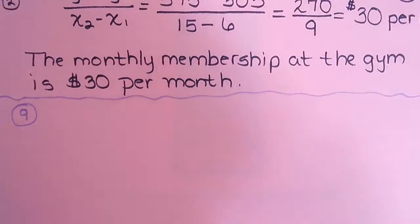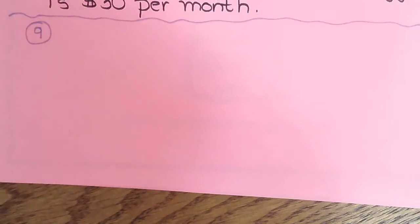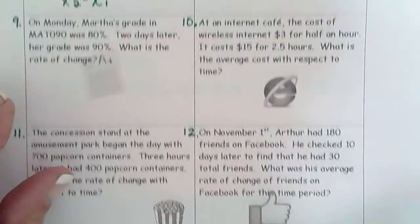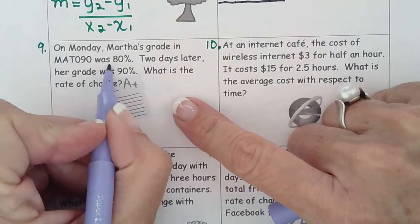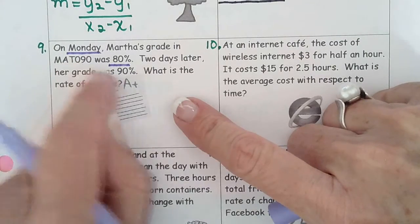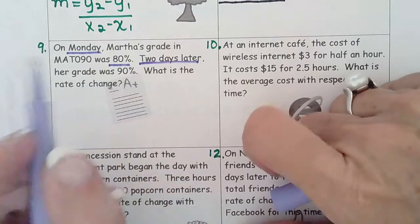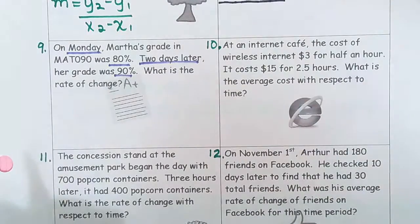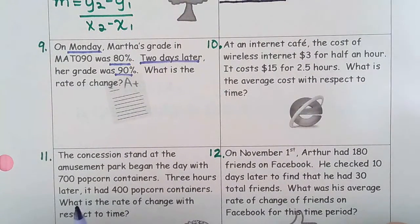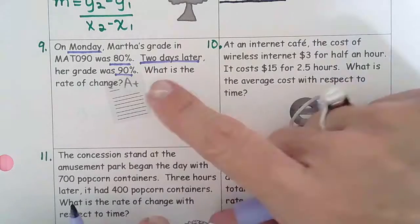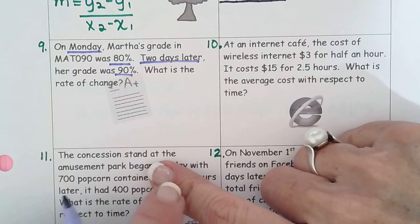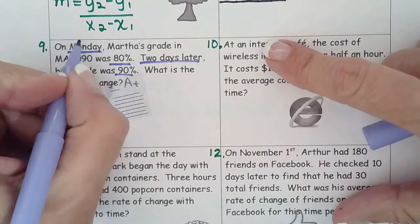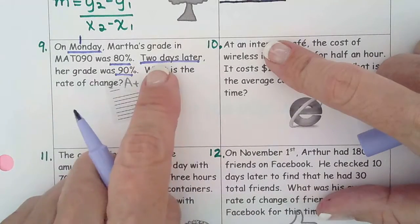Let's look at number nine. On Monday, Martha's grade in mat 090 was 80 percent — so Monday is time, and 80 percent is the grade. Two days later, that's time again, and her grade was 90 percent. This confuses students because they wonder: do I call Monday zero or one? It doesn't matter as long as the next number is two larger, because it says two days later. We'll just call Monday day one — the first day of the week.